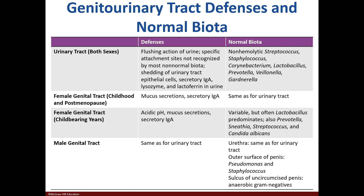In both male and female urinary tracts, we find species like Streptococcus, Staphylococcus, and Gardnerella. The female genital tract in childhood and post-menopause is the same. In childbearing years, Lactobacillus is the dominant species in the female genital tract. The male genital tract contains Pseudomonas, Staphylococcus, or anaerobic gram-negative species.